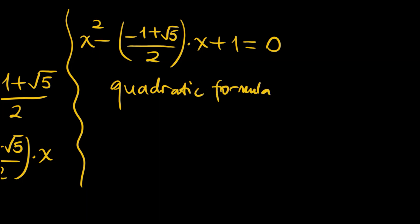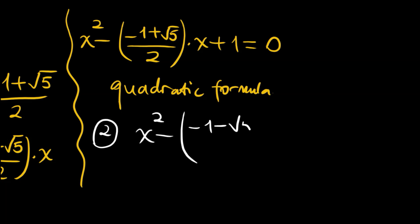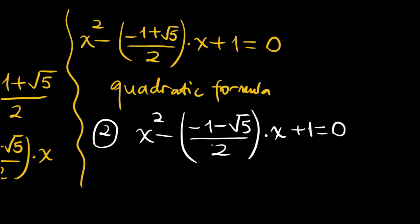For the second t value, we get the quadratic x squared minus (-1 - √5)/2 times x plus 1 equals 0. Using the quadratic formula on each of these two quadratics gives two roots each. Together with x equals 1, we will have five distinct solutions to this equation. Thank you for watching and see you in the next videos.